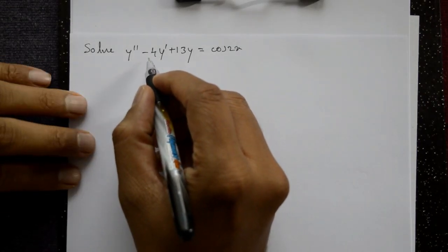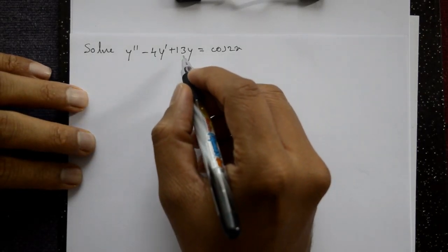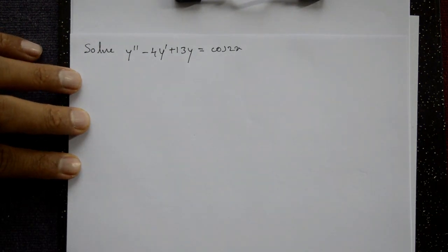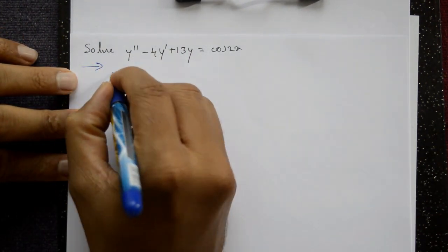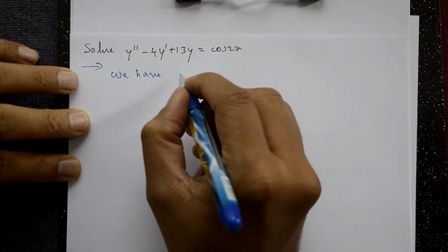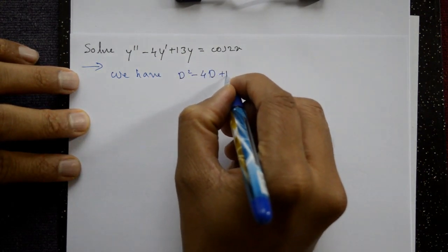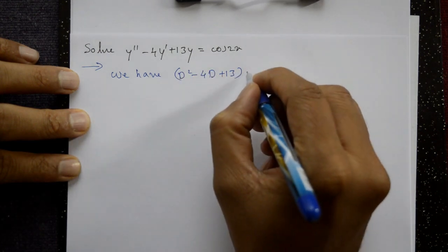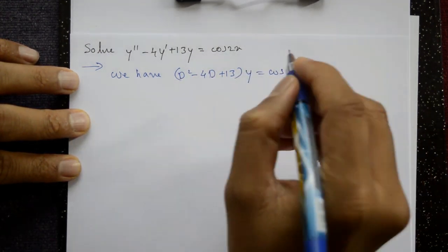Solve y'' - 4y' + 13y = cos 2x. Find the complete solution. So we have: (D² - 4D + 13)y = cos 2x.